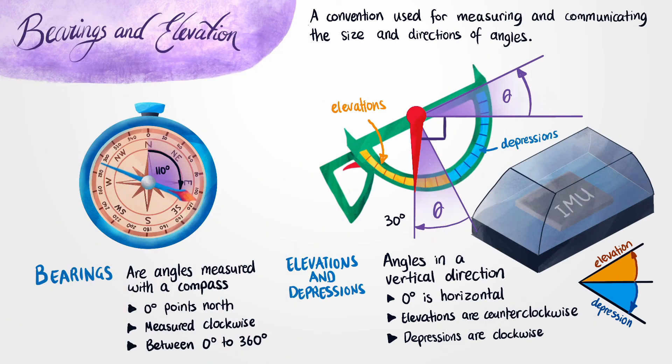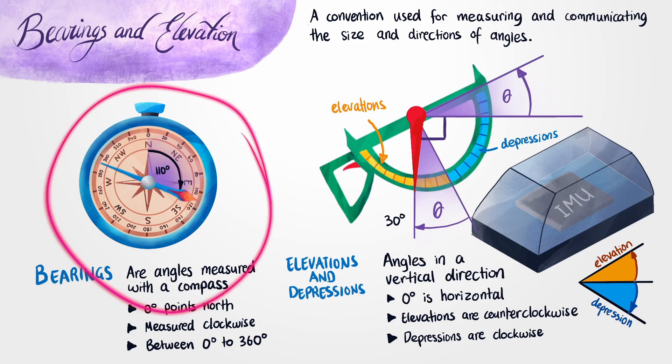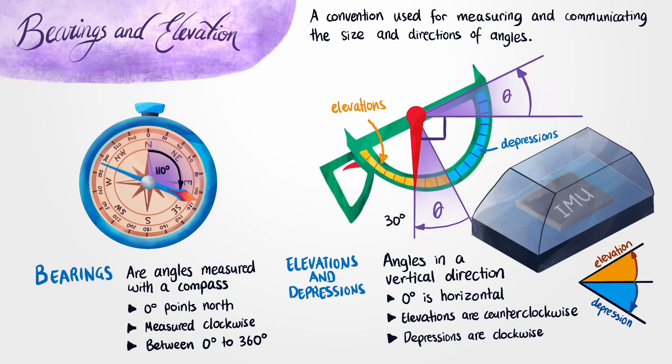And this actually brings us to the end of our lesson. In this lesson we introduced two new conventions to measure angles. The first is a bearing that you'd usually use in a horizontal plane, and the second is the angle of elevation and depression which you'd use to measure in a vertical plane. And now with this we've actually completed our discussion on bearings and elevations.